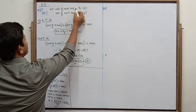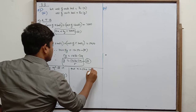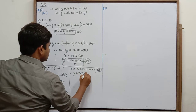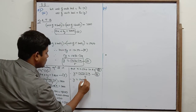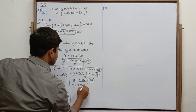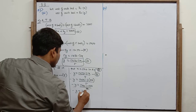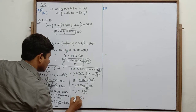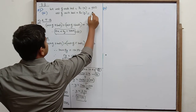So x equals 500, meaning one bat costs rupees 500. Now put x equals 500 in equation 3: y equals (1750 minus 3 into 500) upon 5, equals (1750 minus 1500) upon 5, equals 250 upon 5, equals 50. Therefore cost of each bat is rupees 500 and cost of each ball is rupees 50.